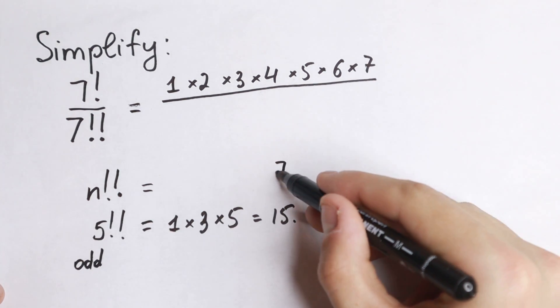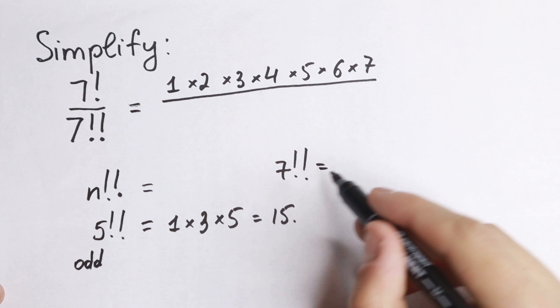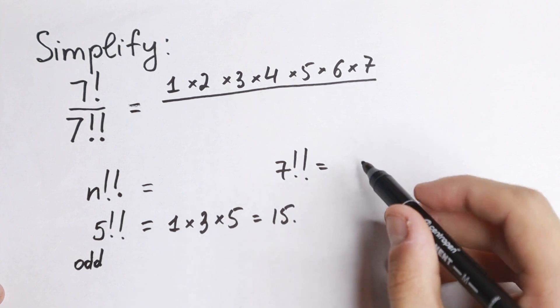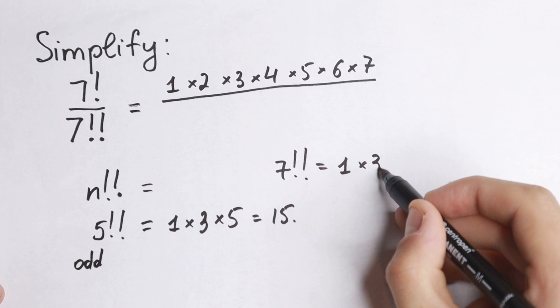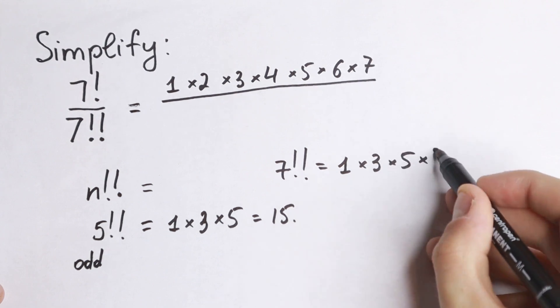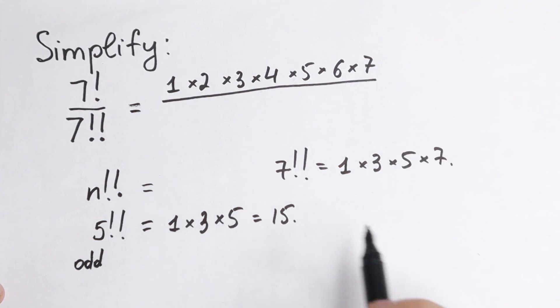7 double factorial: 7 is an odd number, so it uses only odd numbers. So we have 1 times 3 times 5 times 7. This is 7 double factorial.